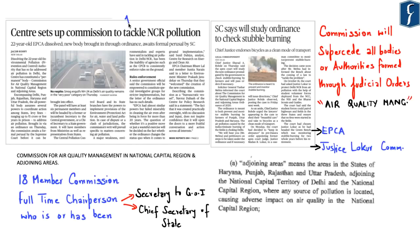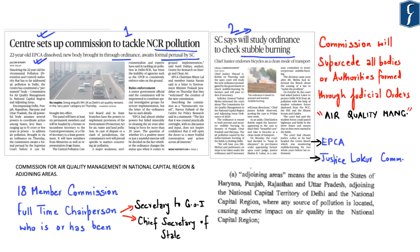The first news appears on page numbers one and two. The news says the Centre sets up a commission to tackle NCR pollution; the 22-year-old EPCA has been dissolved. A new body was brought in through an ordinance and awaits formal perusal by the Supreme Court. The Supreme Court will study the ordinance to check stubble burning. Through this ordinance the central government has established the Commission for Air Quality Management in National Capital Region and Adjoining Areas, with a full-time chairperson who is or has been either Secretary to the Government of India or Chief Secretary of any state. The commission shall be an 18-member body.